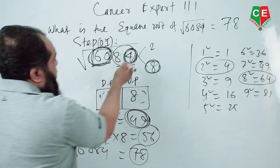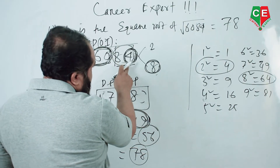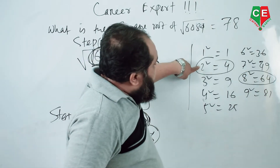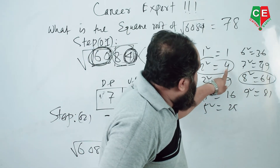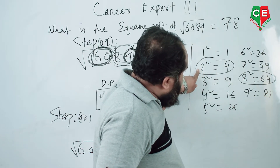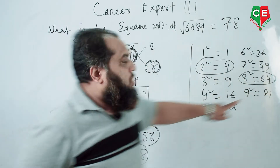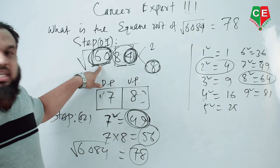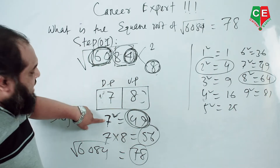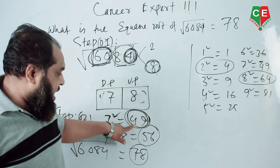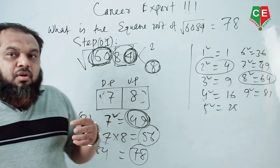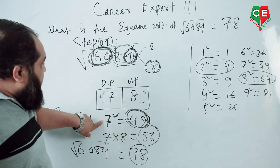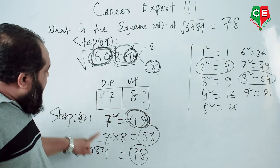Let's repeat it again. Step one: make two pairs — 60 and 84. Then look at the unit place: it is 4. Since 2 squared equals 4 and 8 squared equals 64 (unit place 4), the unit place will be either 2 or 8. Then look at the first pair, 60. The square term below 60 is 49, which is 7 squared. So 7 is the tens digit.